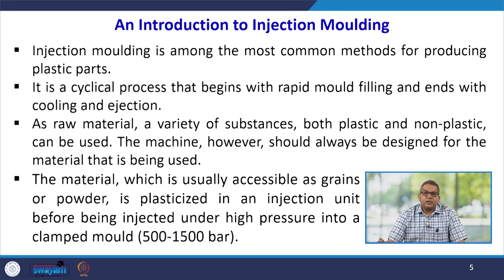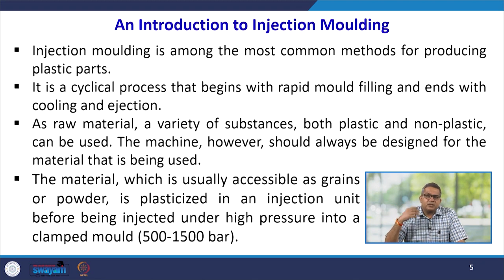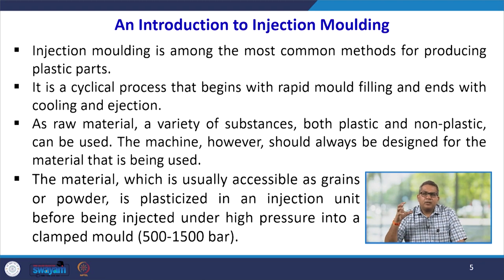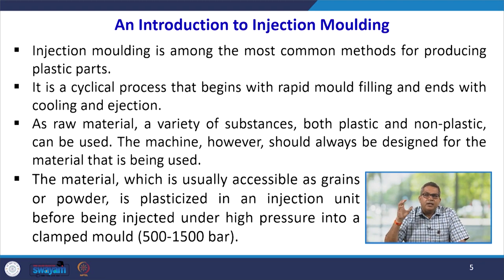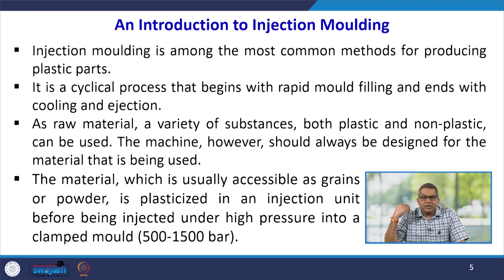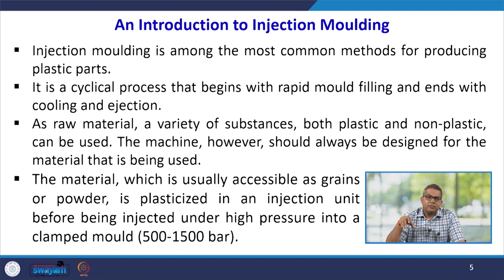Injection moulding is the most common method for producing different plastic parts — commodity materials, plastic chairs, buckets, and all kinds of commodity things. It is a cyclic process that begins with rapid mould fitting and ends with cooling and ejection. The polymer is introduced, heated, and passed through the mould. Mould design is crucial, cooling channels are essential, and once the part is prepared it is ejected out. As raw material, a variety of substances — both plastics and non-plastics — can be used, and the machine is designed for the material being used. Materials are usually accessible as grains or powder, injected under very high pressure of 500 to 1500 bars into a clamped mould.